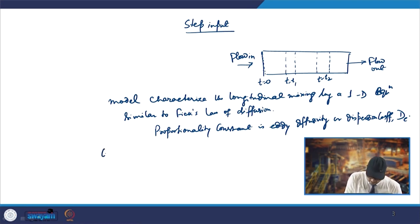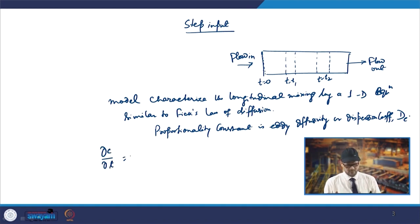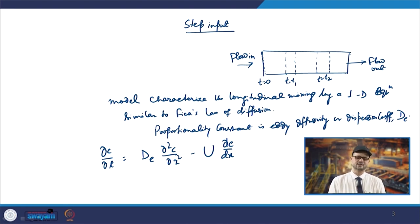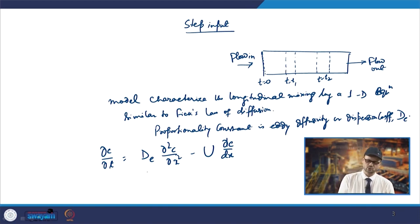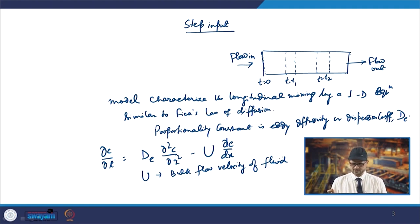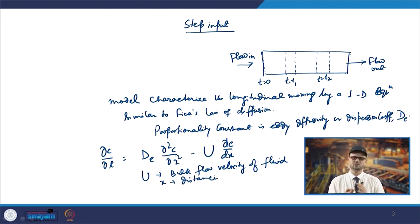The unsteady-state concentration equation can be written as: ∂C/∂t = D_e · ∂²C/∂x² − u · ∂C/∂x, where D_e is the dispersion coefficient, u is the bulk flow velocity of the fluid, and x is the distance coordinate varying from 0 to L, the vessel length.